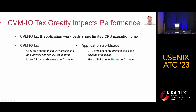Then, we define and quantify the CVM IO tax, which greatly impacts performance. CVM IO tax and application workloads share the limited CPU execution time. We define the CVM IO tax as CPU time spent on security protections and intrinsic network I/O procedures, where application workload is the CPU time spent on business logic and payload processing. That is, more CPU time spent on the CVM IO tax means worse performance.